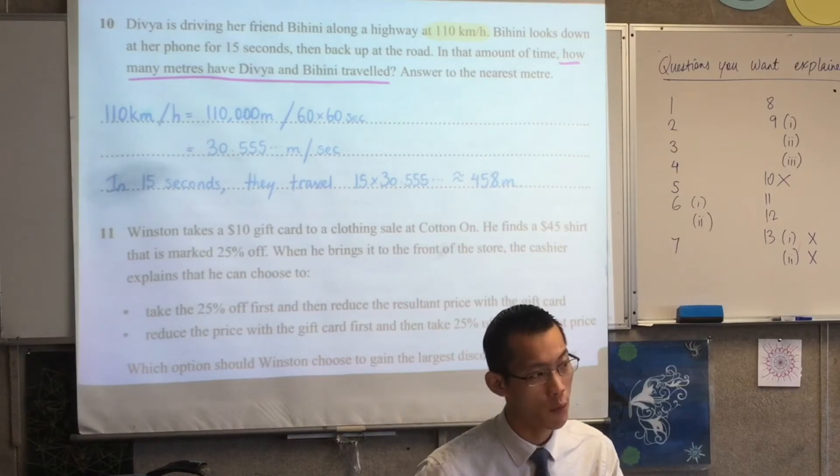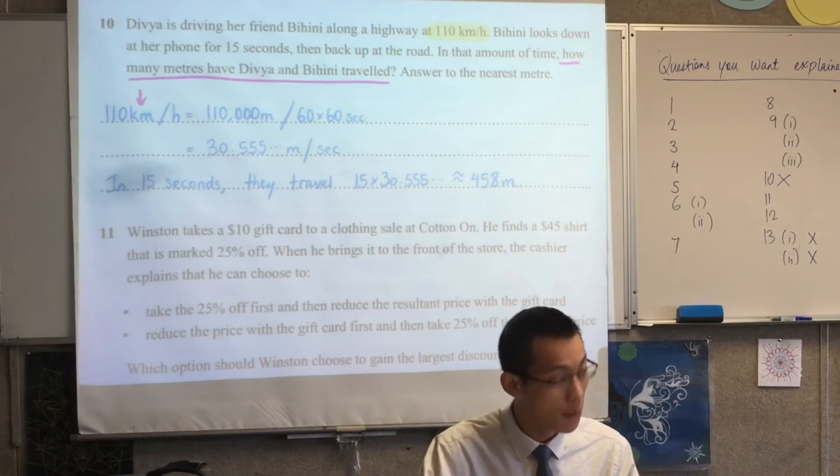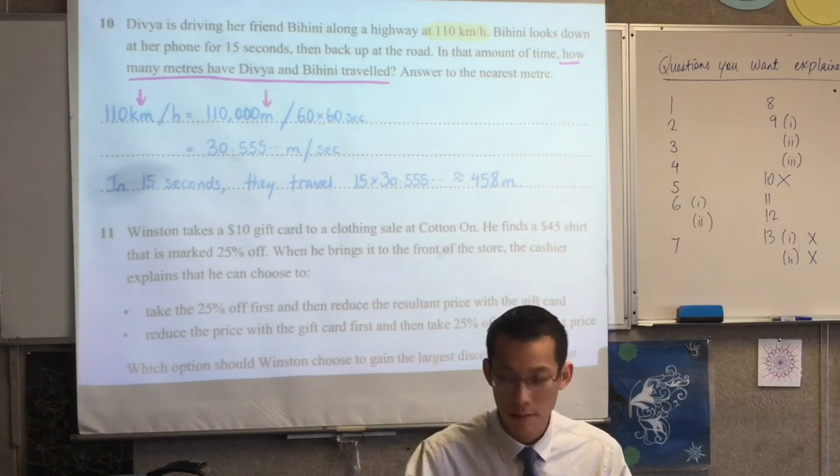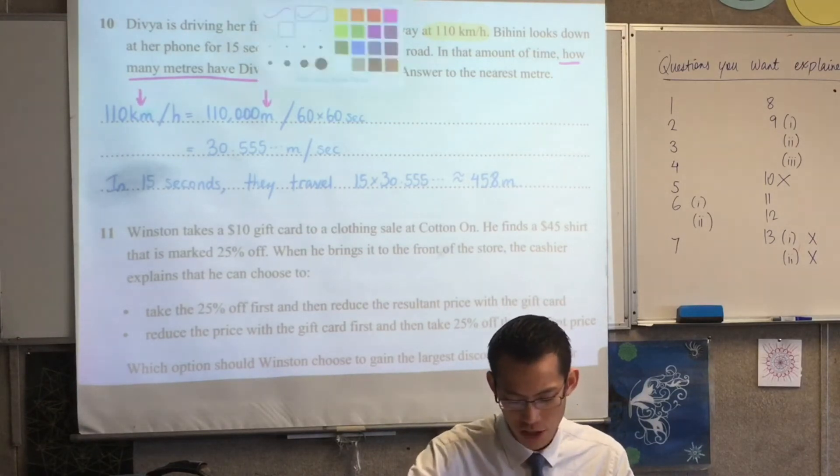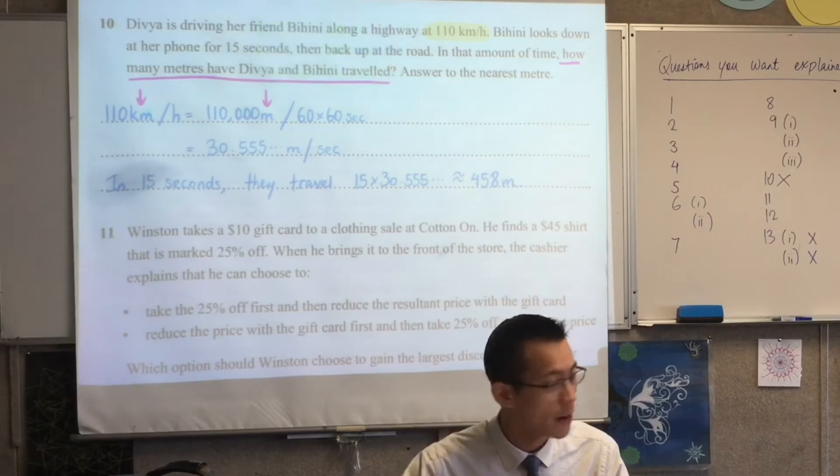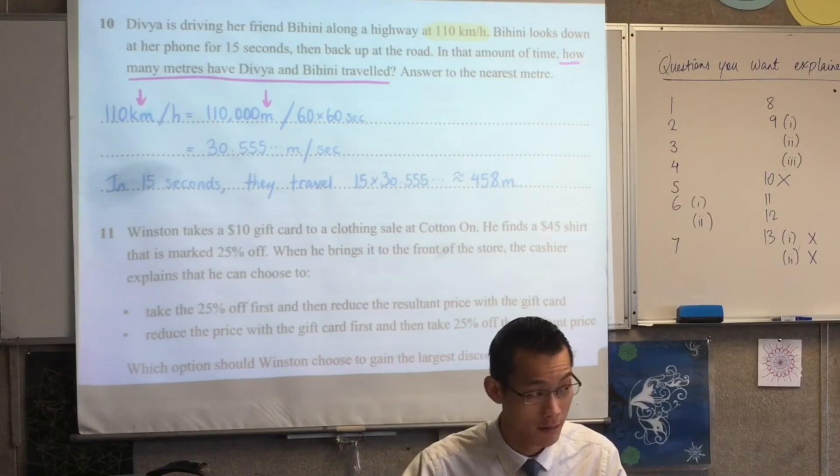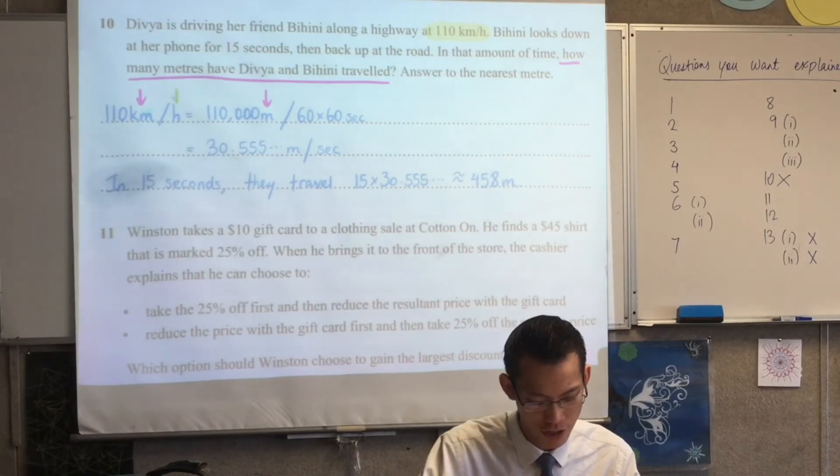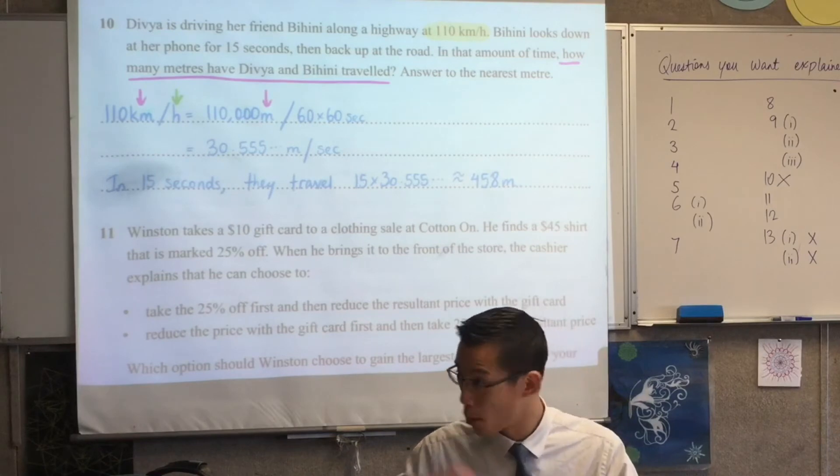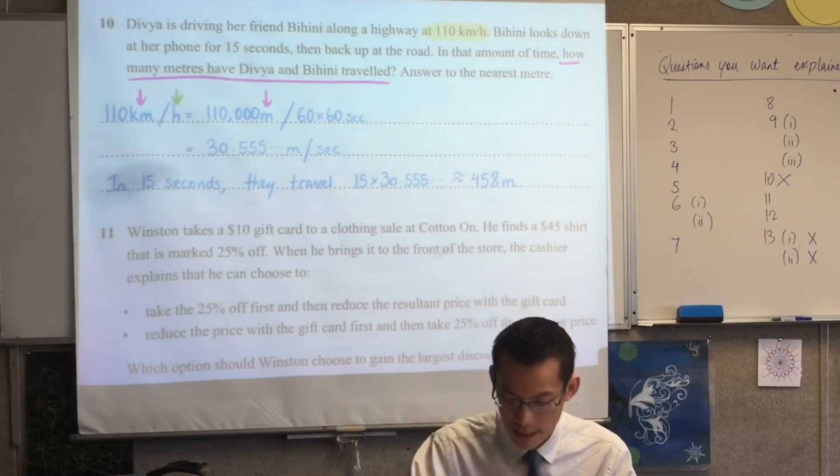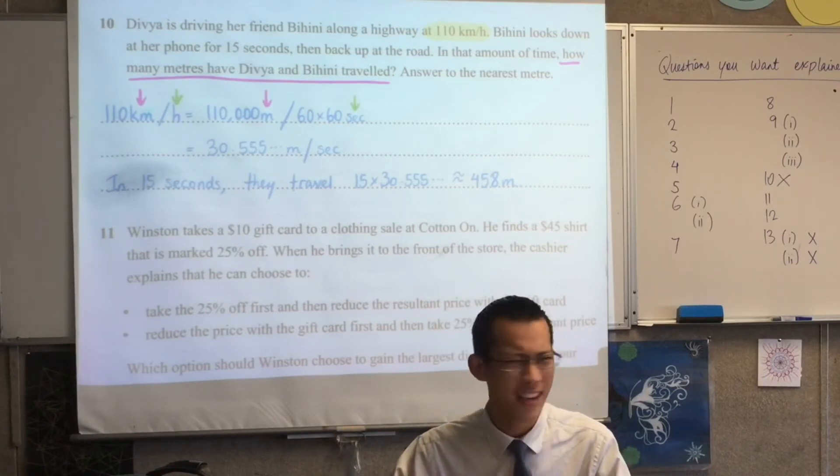So that's why you can see in my working, the very first thing I have to do is I have to convert kilometers into meters, but that's not all. What other conversion do you see? Have a look at my working. What else have I converted and why? Have a look at my top line of working. What have I converted? You've got the other part of the ratio, right? Kilometers were per hour before. Yeah. And I want them in seconds.